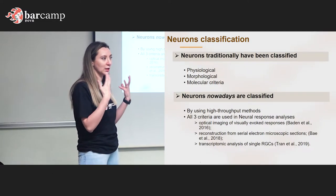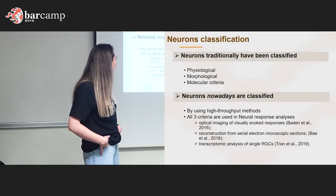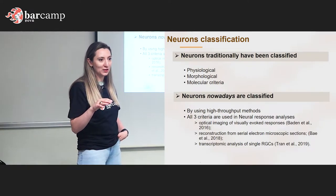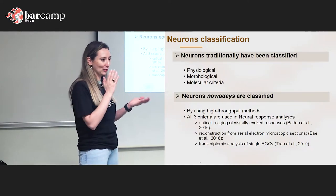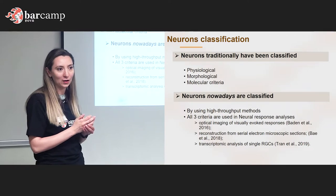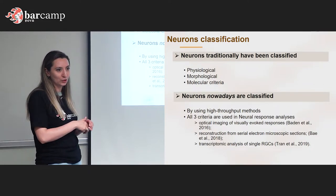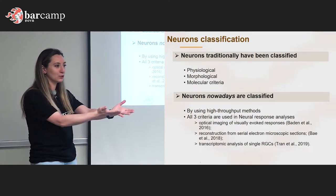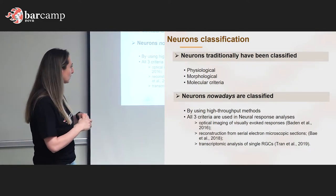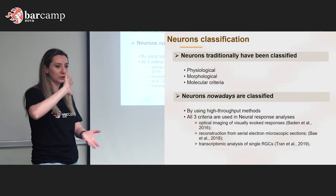Then the molecular and genetic approaches came along — much younger but moving very fast. You can now just send a sample and get the genetic profile of cells. But nowadays it gets more complicated because we're not only looking at morphology, physiology, or genetics separately. Just as with a person, you need all three combined to fully understand how neurons are functioning.